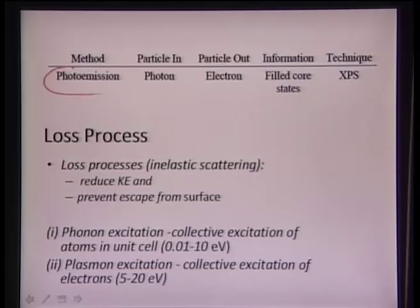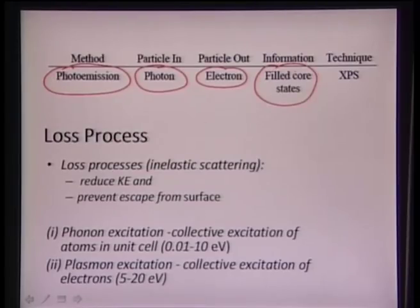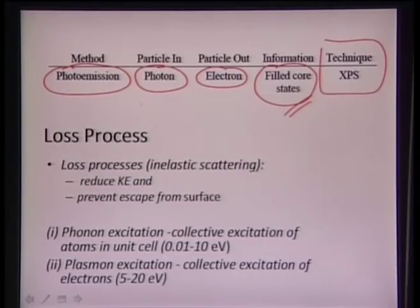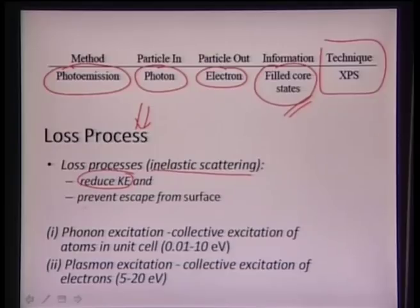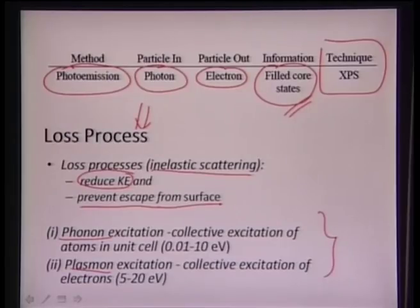In this method we utilize photoemission — we are incident a photon and the particle coming out is an electron. We see excitation of an electron; another electron fills up the core level, and we find out the status of the filled core levels. There are also loss processes associated with XPS arising from inelastic scattering, which reduces the kinetic energy of the electron and may prevent its escape from the surface. These inelastic scattering events can occur via phonon or plasmon excitations, which absorb certain energy.